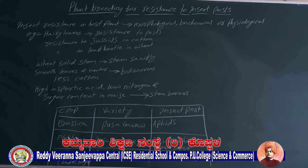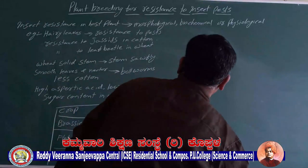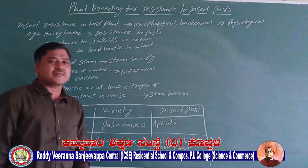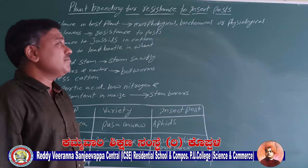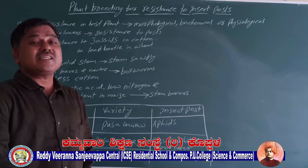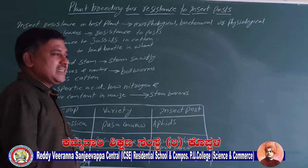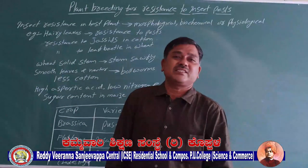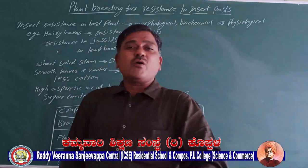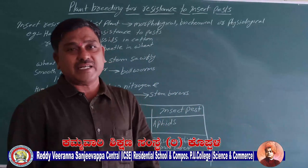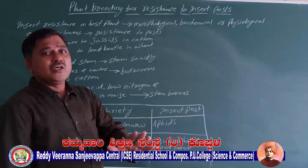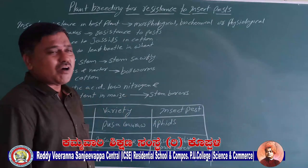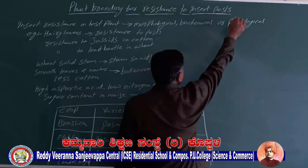Good morning students. Today we are going to the next point, that is plant breeding for resistance to insect pests. In the last video, we studied about plant breeding for disease resistance. Bacteria, viruses, and fungi cause diseases to plants. The second main reason for decrease in crop yield is the presence of insect pests.